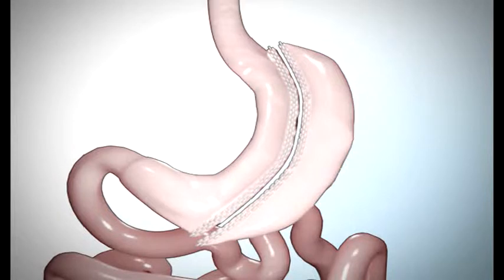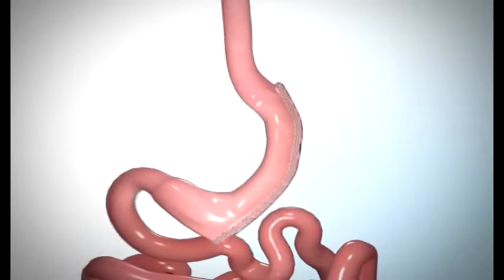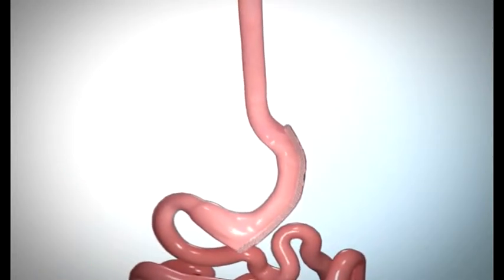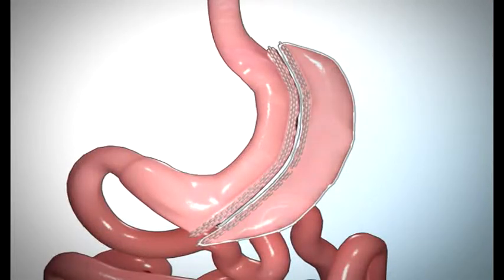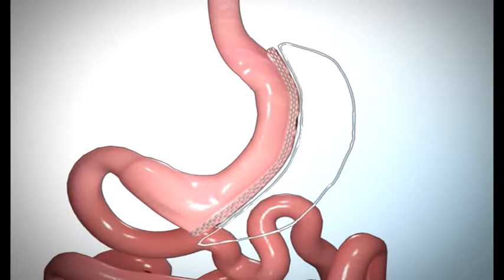The third step in the sleeve gastrectomy is removing part of the stomach. Your surgeon will remove the left part of the stomach, which includes the fundus. The fundus is one of the areas of the stomach that produces the hormone that controls your appetite.